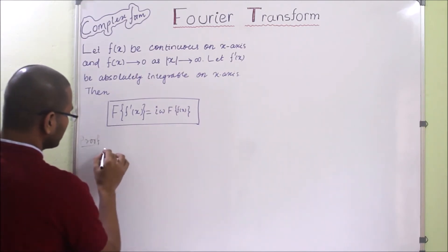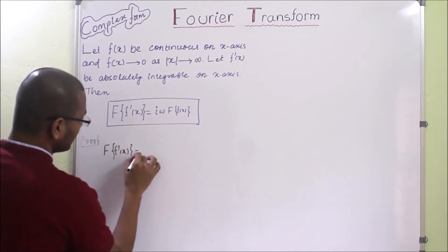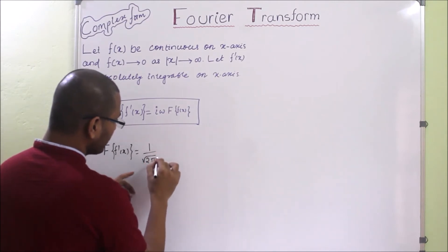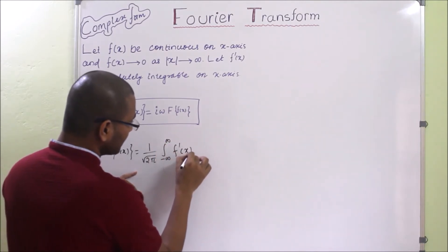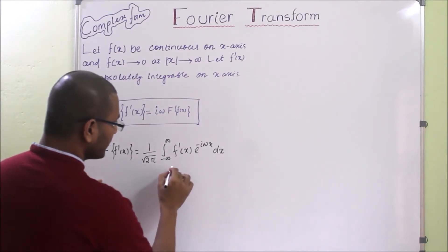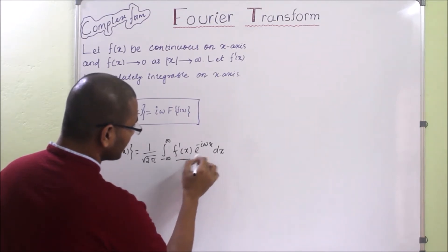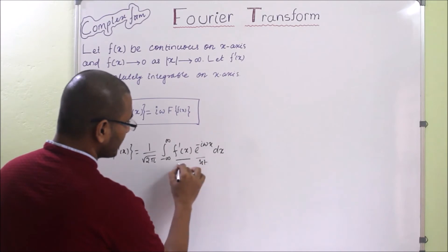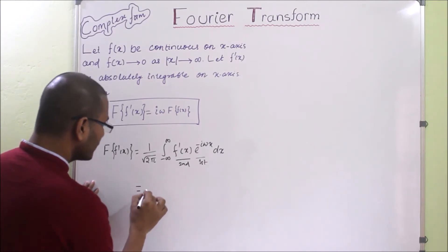Now we will solve it. The Fourier transform of f'(x) — if you write the formula and replace f with f'(x) — becomes (1/√2π) times the integral from −∞ to +∞ of f'(x) · e^(−iωx) dx. There are two functions in this integral: f'(x) and e^(−iωx). We take one as the first function and the other as the second function and apply the integration by parts rule.